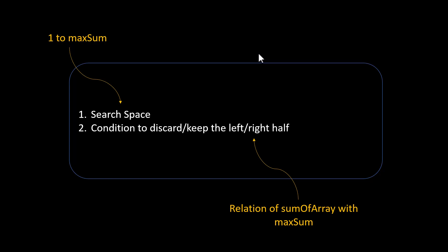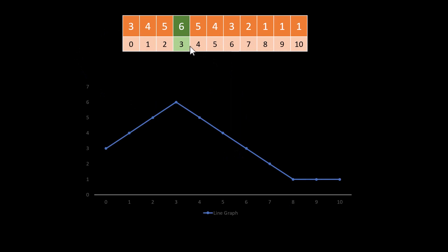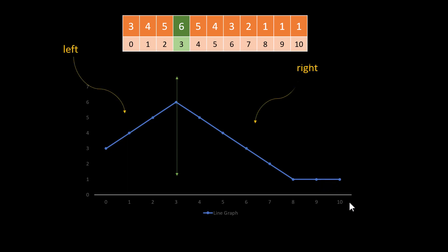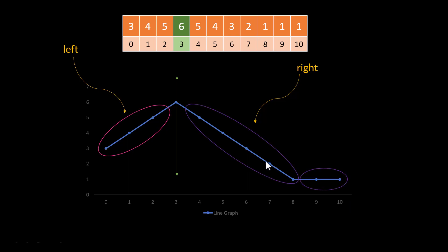Now we only need to find a way to find out the sum of the array. Let's see an example. We have the index we are trying to maximize, and I have plotted a graph of it. The peak element goes down on both sides, and once it reaches 1 it forms a plateau of 1s. Let's divide it into two parts: left and right. The sum of the entire array is the sum of left, the sum of right, and the element itself.